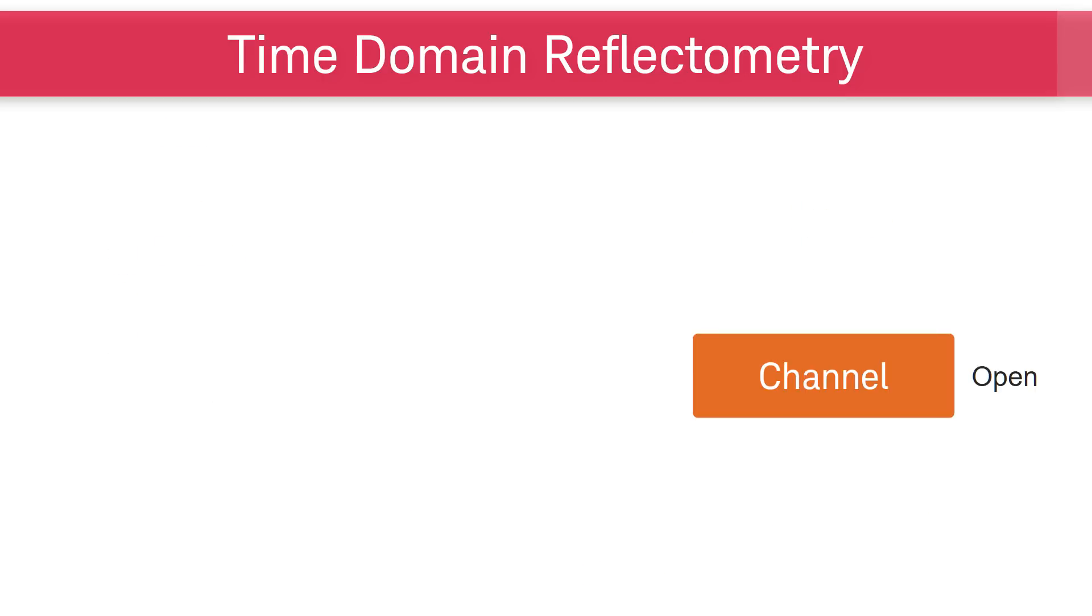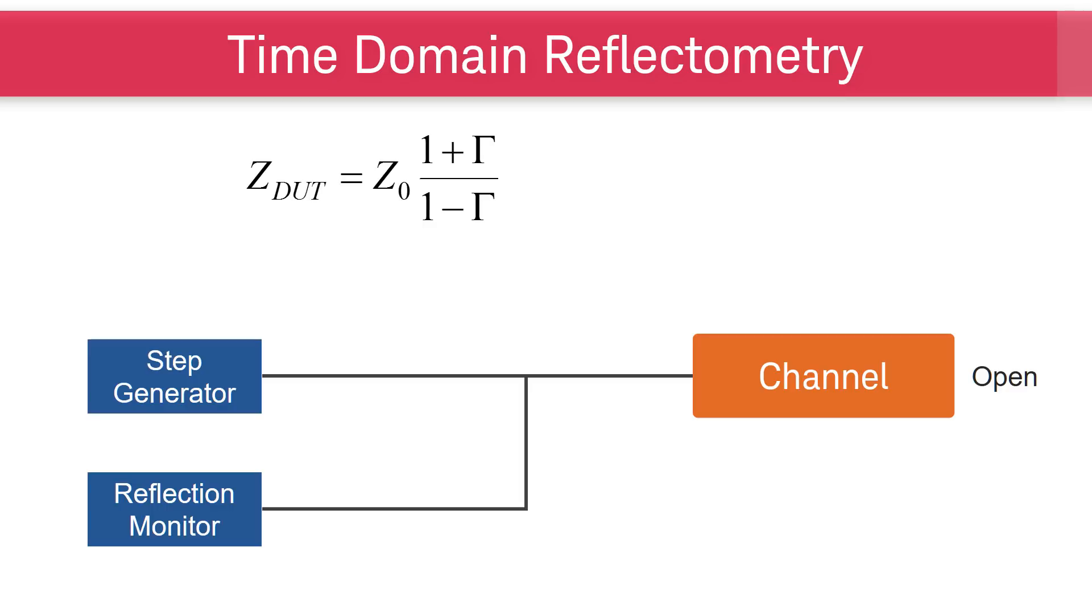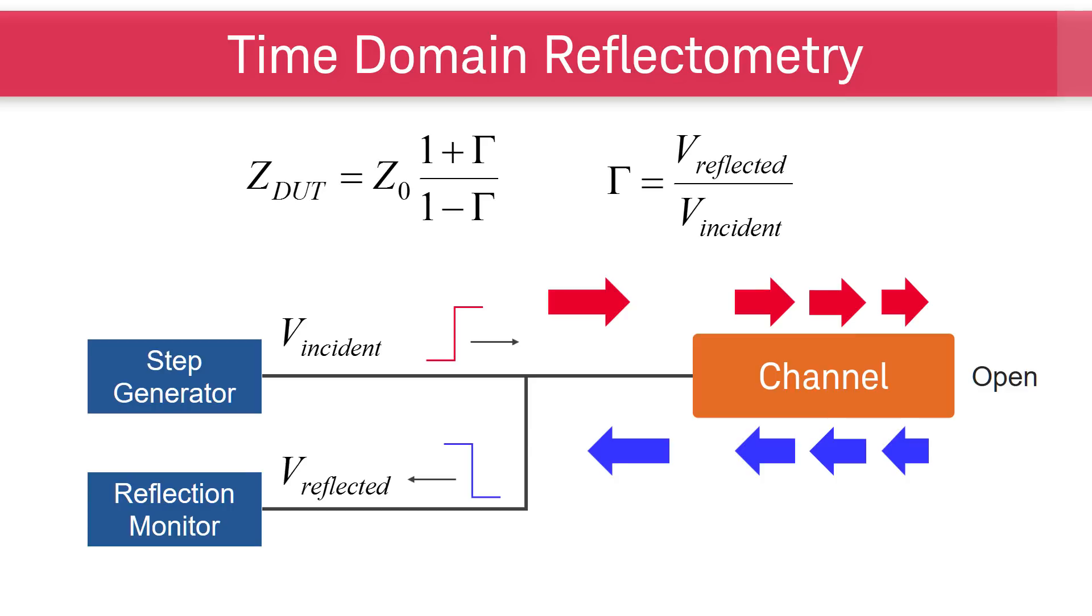To create the TDR plot, we first express the channel impedance in terms of a known system reference impedance, Z0, and reflection coefficient, gamma. To find gamma, we will need a step generator and a reflection monitor. As the step generator produces an incident wave traveling down to the channel, the reflection monitor is capturing all the reflections. By taking the ratio between incident wave and reflected wave, we can calculate gamma. And once gamma is known, we can plot the impedance.